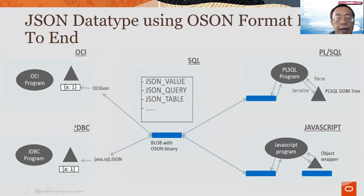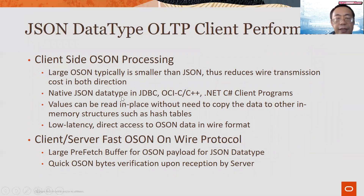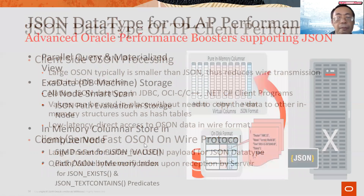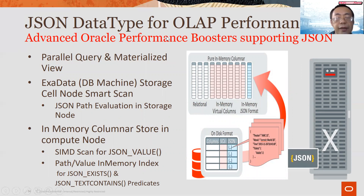This is the overall vision for end-to-end support of JSON data types through OSON. The database uses OSON throughout, and all clients also use OSON, making the OSON binary format truly end-to-end. The client side has native OSON encoders and decoders in popular languages like C, C++, Java, and .NET, and they access OSON bytes on the wire. There is fast client-server communication on the wire protocol to send OSON bytes much more efficiently. JSON data type is integrated with every performance booster Oracle has — supporting parallel query, materialized views, Oracle Exadata storage pushdown for smart scan JSON path evaluation at the storage node, and in-memory kernel format loading in the compute node to speed up queries.